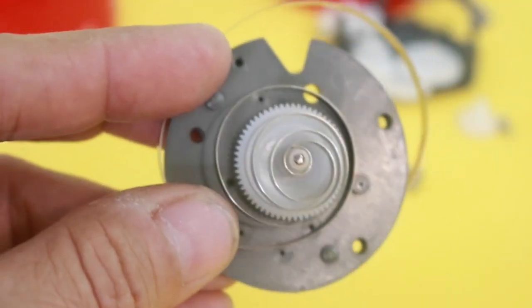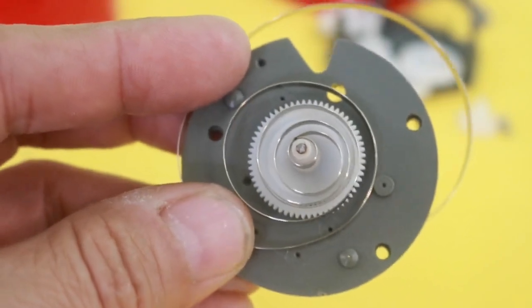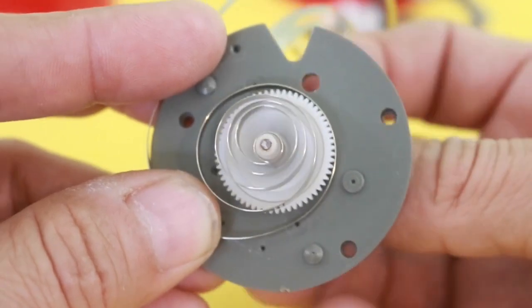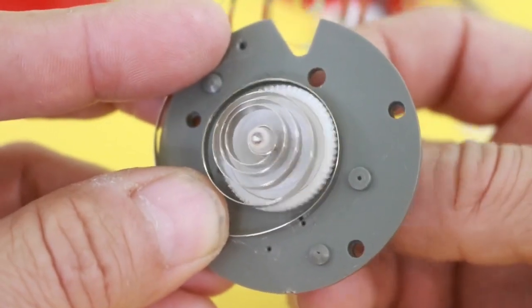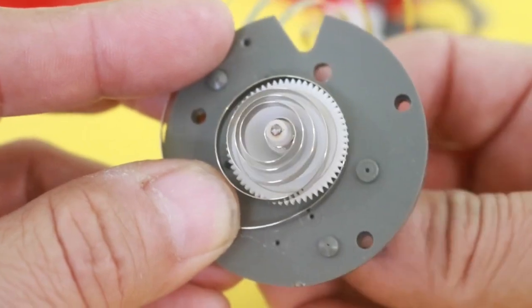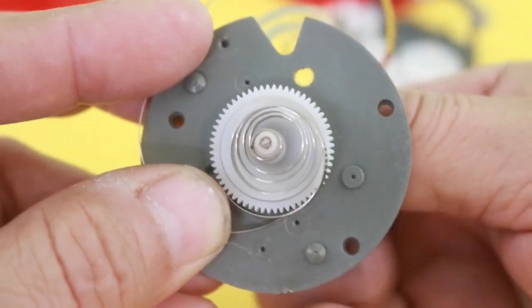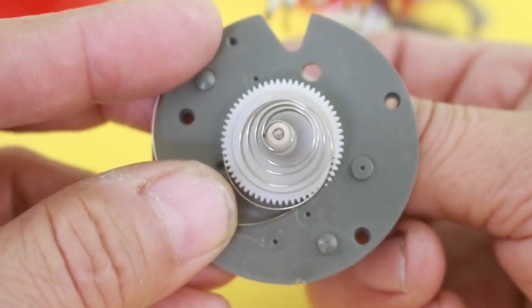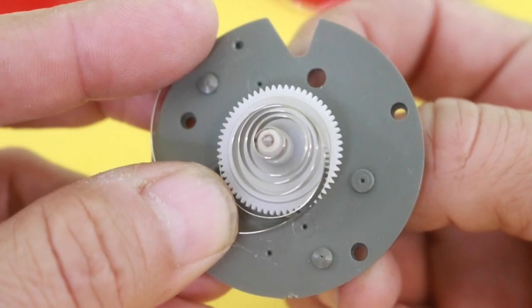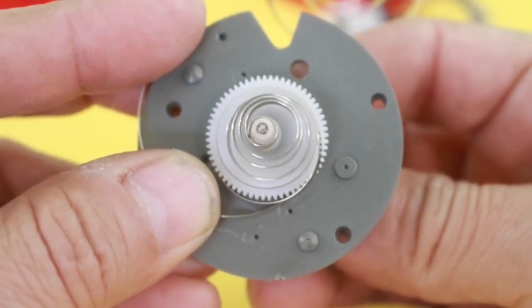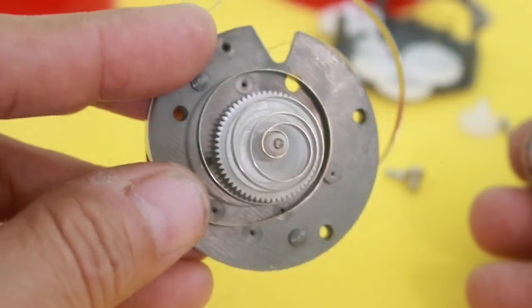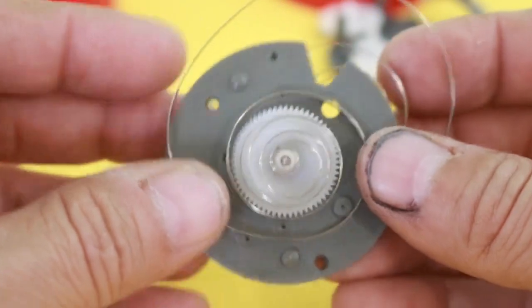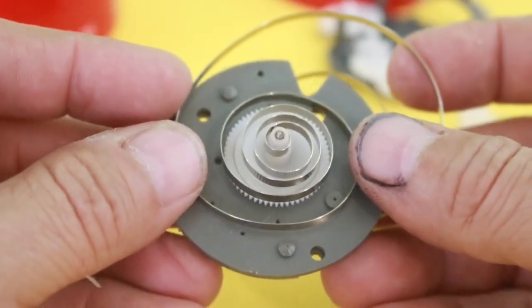Here we can see the main spring and as I commented before, when you wind up the mechanism, what you do is that the spring is wound up and the energy is stored. But we need all the set of gears because without the gears and the escapement, if you release, now all the energy will be released in a fraction of a second, instead of slowly as the mechanism must work.